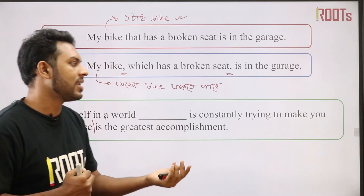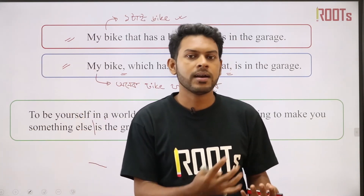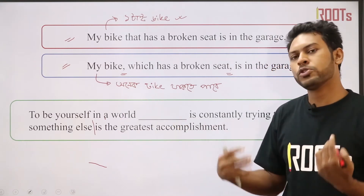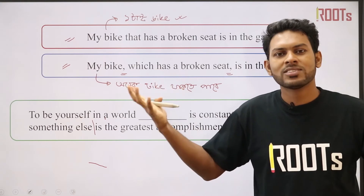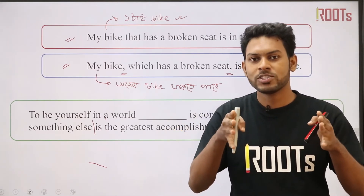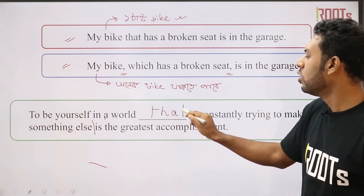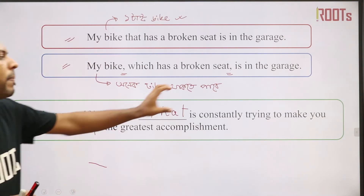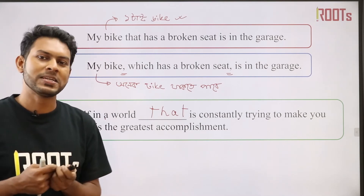This world is constantly trying to make you something else — we are talking about the world as a whole. When you add this clause, it gives the sentence meaning and vibe. If you remove the clause, the sentence changes completely. That's why whether you use 'that' or 'which' — our sentence meaning will depend on this. This will be tested in the IBA to check how much you understand that versus which.